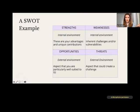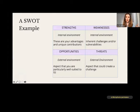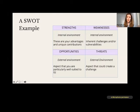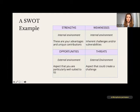A SWOT example — this is basically what it looks like. It's strengths and weaknesses, which are focused on the internal environment — the inherent characteristics of what you're focusing on. The opportunities and threats are things that are more external in nature.